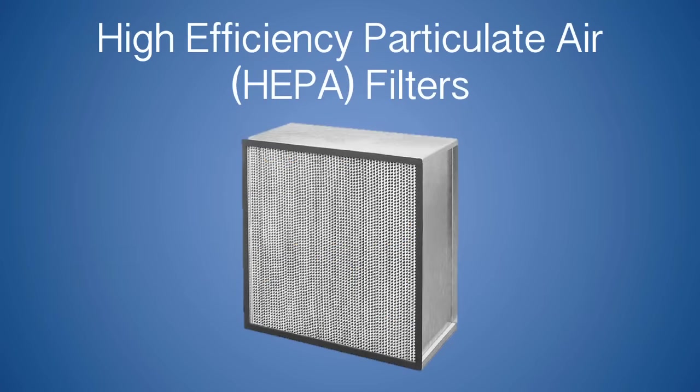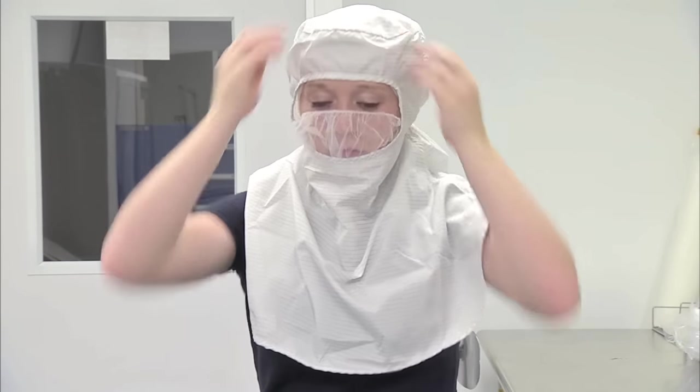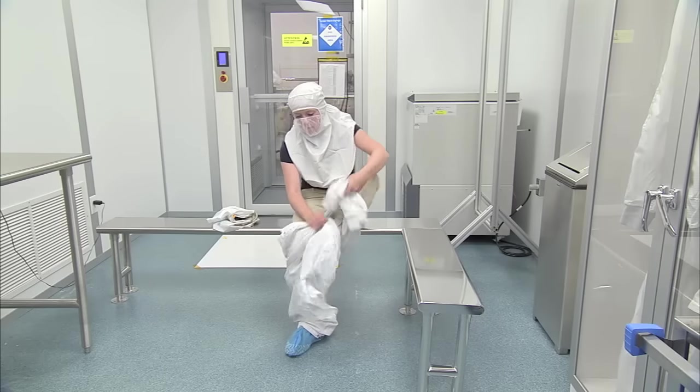Filtered air flows into the room through High Efficiency Particulate Air, or HEPA, filters. Clean rooms are classified based on the amount of allowed airborne particles in the room at any given time. The fewer particles allowed, the more precautions that must be taken in order to prevent contamination.